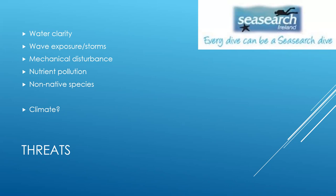In terms of threats to seagrass beds, one of the big ones is water clarity. It's a flowering plant — it needs light to survive. If water clarity is particularly poor it will die. Other threats include wave exposure and storms, mechanical disturbance including the anchoring of boats, nutrient pollution, non-native species including Sargassum muticum, and climate change, which is always in the background with any marine species.